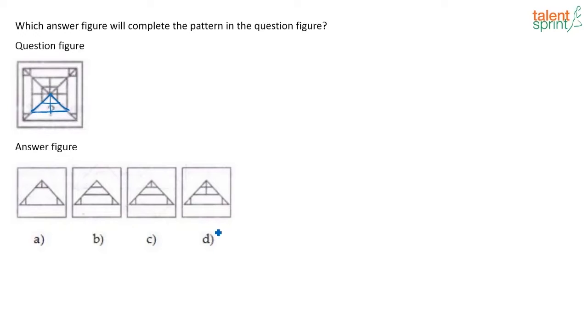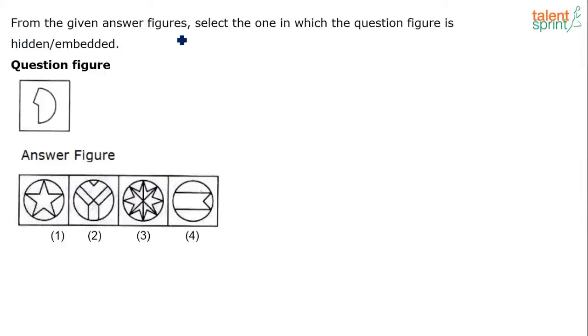You can take option D directly. From the given answer figures, select the one in which the question figure is hidden or embedded. There are four answer figures given to us. Our job is to identify the answer figure in which this question figure is hidden or embedded. This shape that you see in the question is locked in one of the answer figures. It is embedded somewhere in one of the answer figures. So which is that answer figure is the question here.